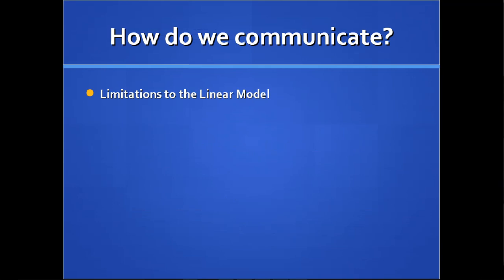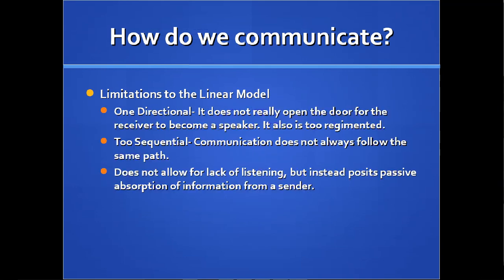Then we get to the limitations of the linear model. We see it's one-directional and sequential. Communication doesn't always follow that same path — there are stopgaps, noise, and things that happen. It doesn't allow for a lack of listening, but instead posits passive absorption. That's why Shannon and Weaver's model is a little bit better.